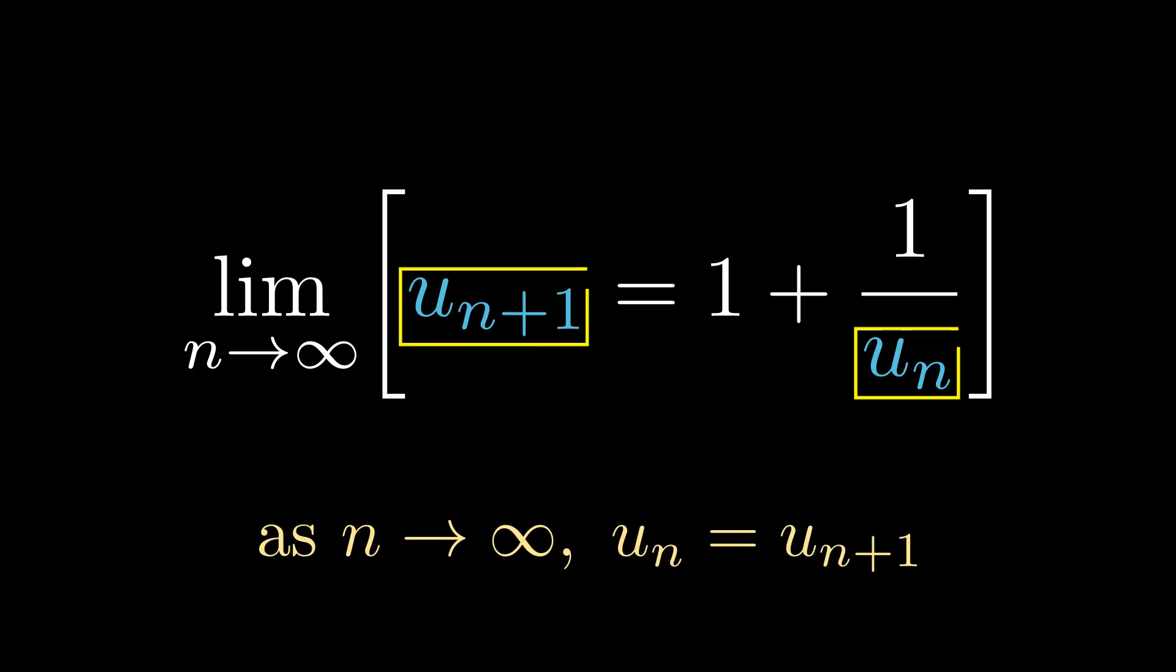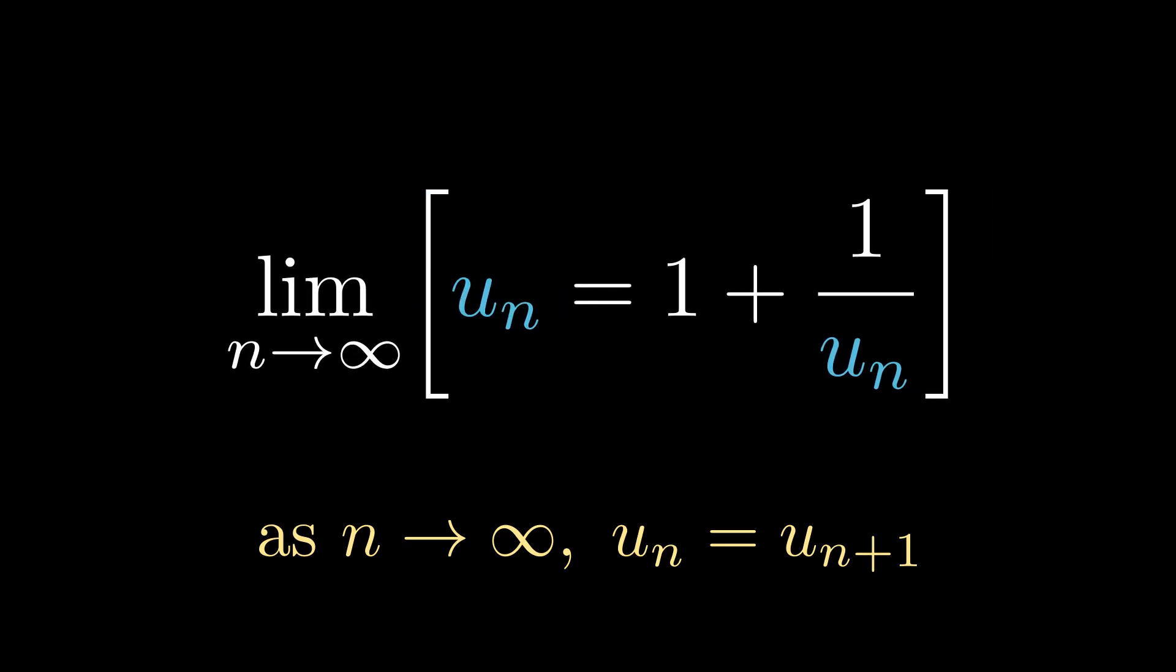Now let's use the new technique we have. We can see that the conditions to use this rule are satisfied in the equation, so now we can substitute u(n+1) with u(n). This will make the equation much easier to solve, as now we only have a single unknown.